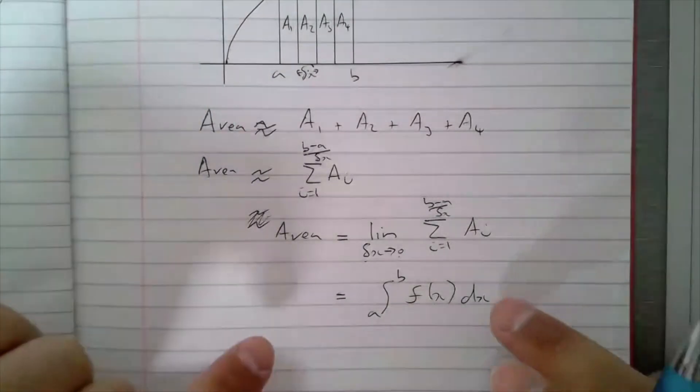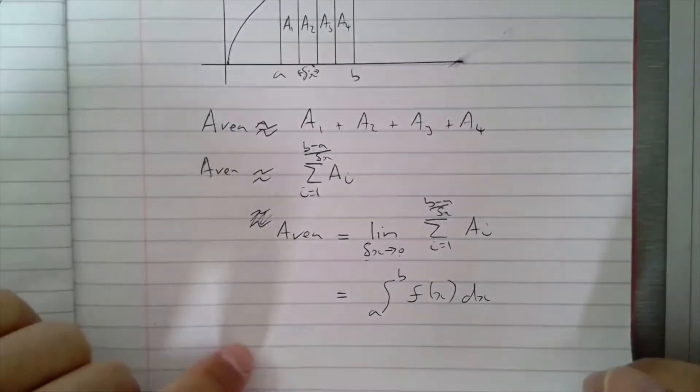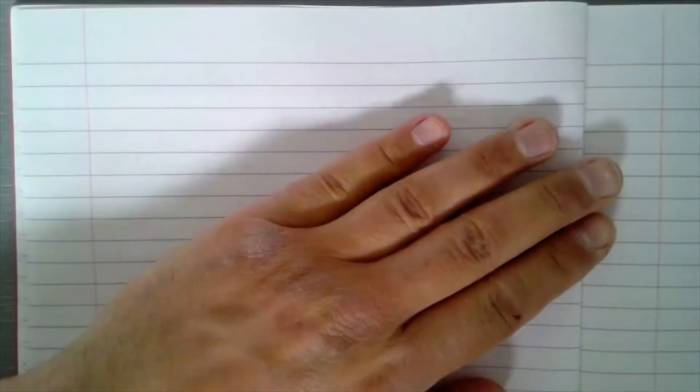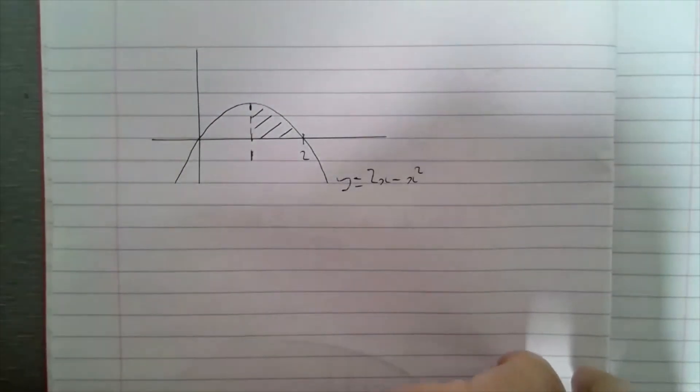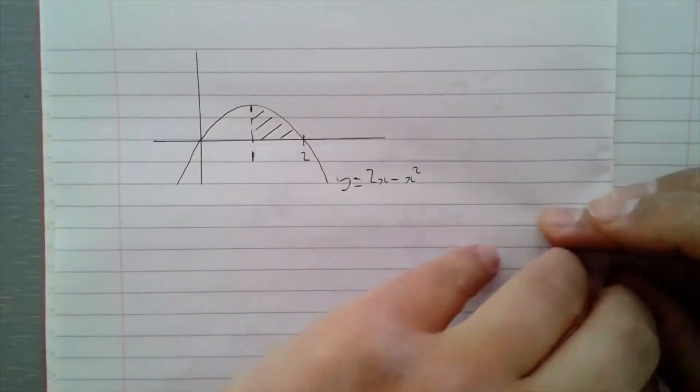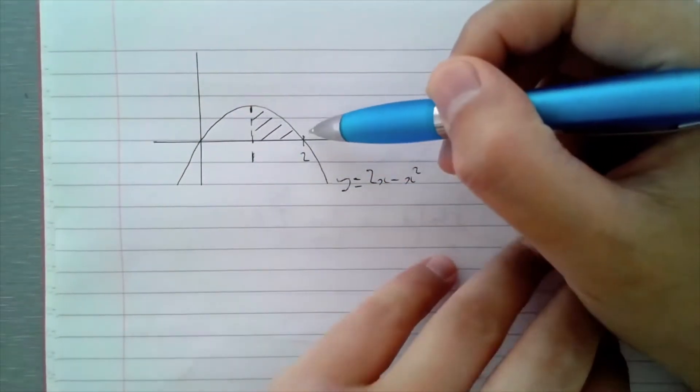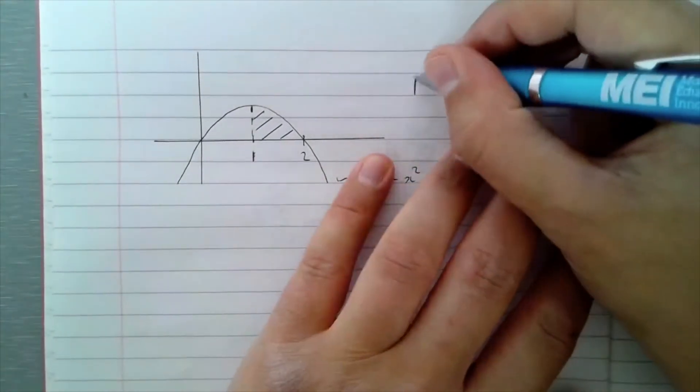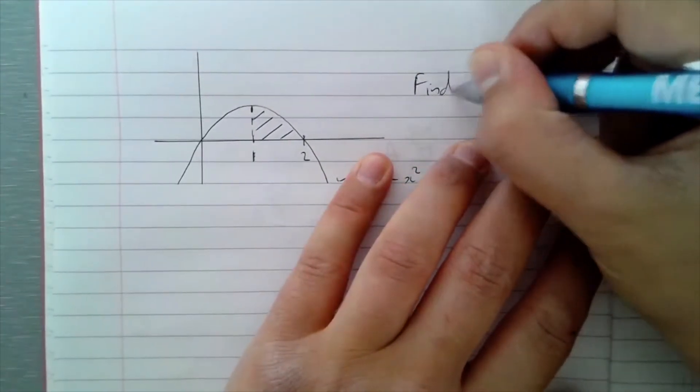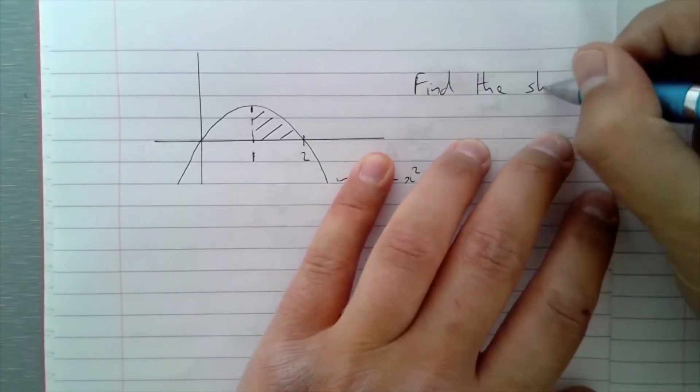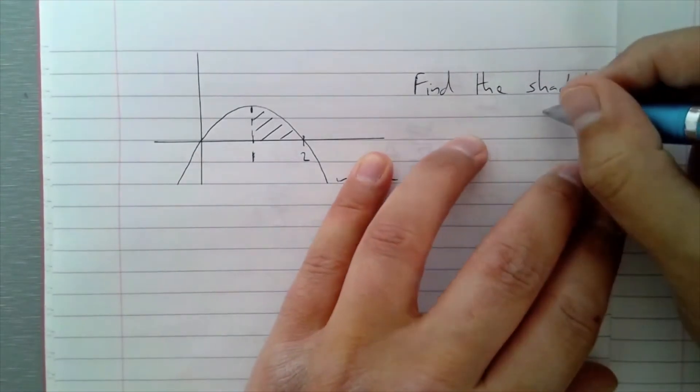Okay, so let's use this idea to work out the area underneath a curve. Let's try the following. If I was given this question here - here's a graph, there's a shaded bit here between 1 and 2, and the question was just find the shaded area.